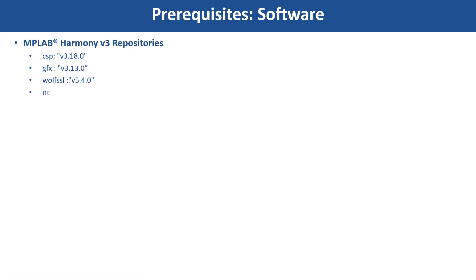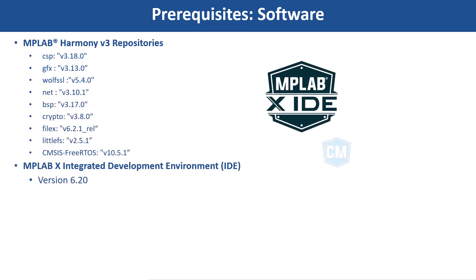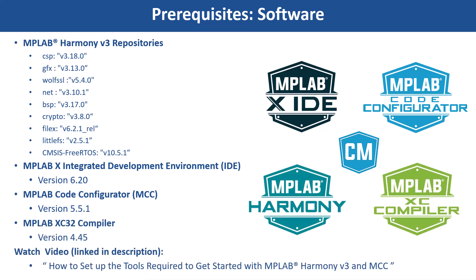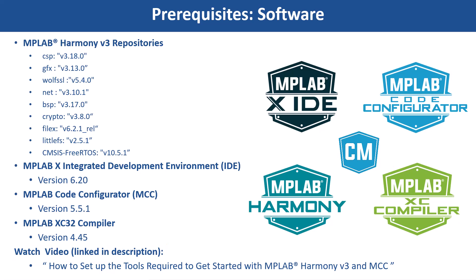To get started, clone the MPLAB Harmony V3 repositories and install the software shown here. You can use MCC Content Manager to clone these Harmony packages. If you are new to MCC, be sure to watch these videos — you can find the links in the video's description.